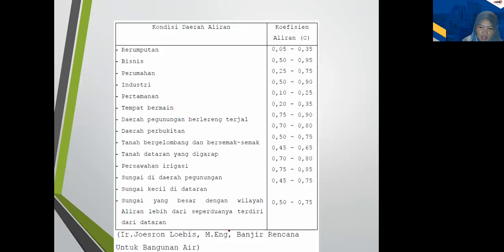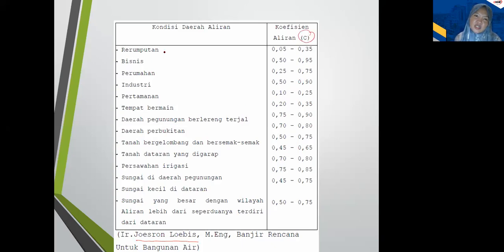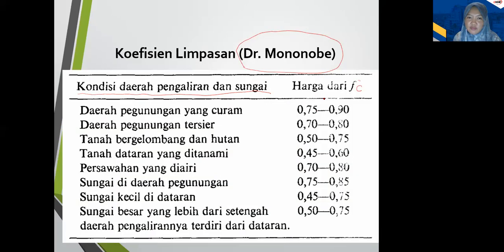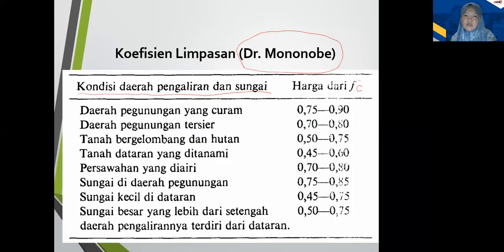Ada juga koefisien khusus dari Insinyur Jusrun Lubis, yang merumuskan berdasarkan penelitian-penelitian untuk Indonesia. Dia merumuskan koefisien aliran C untuk: perumputan, bisnis atau perkantoran, perumahan, industri, pertamanan, dan tempat bermain. Jadi yang mana yang harus dipakai? Semua boleh dipakai, tapi harus konsisten — kalau mau pakai yang ini, ya pakai ini saja.